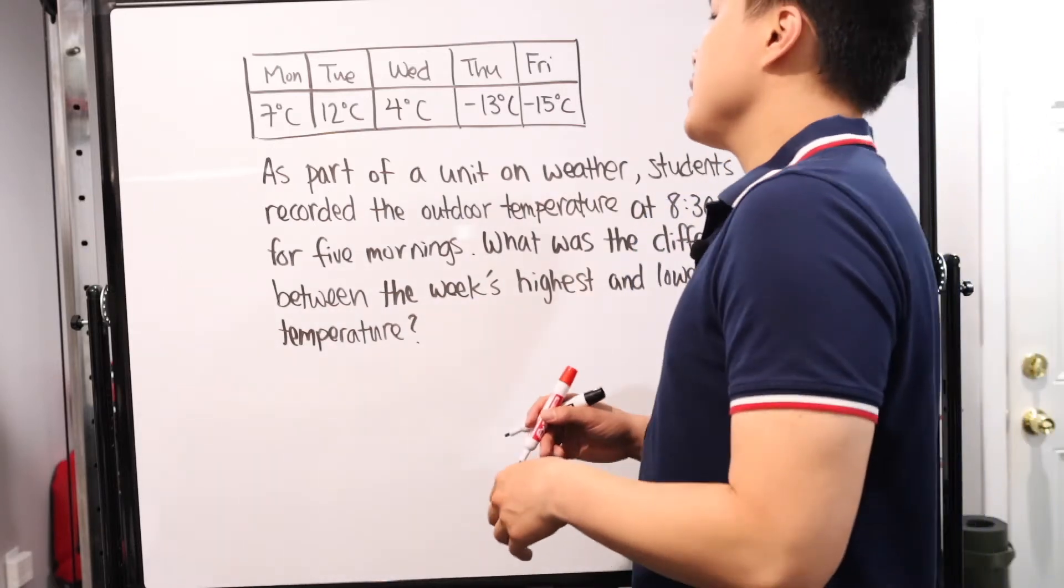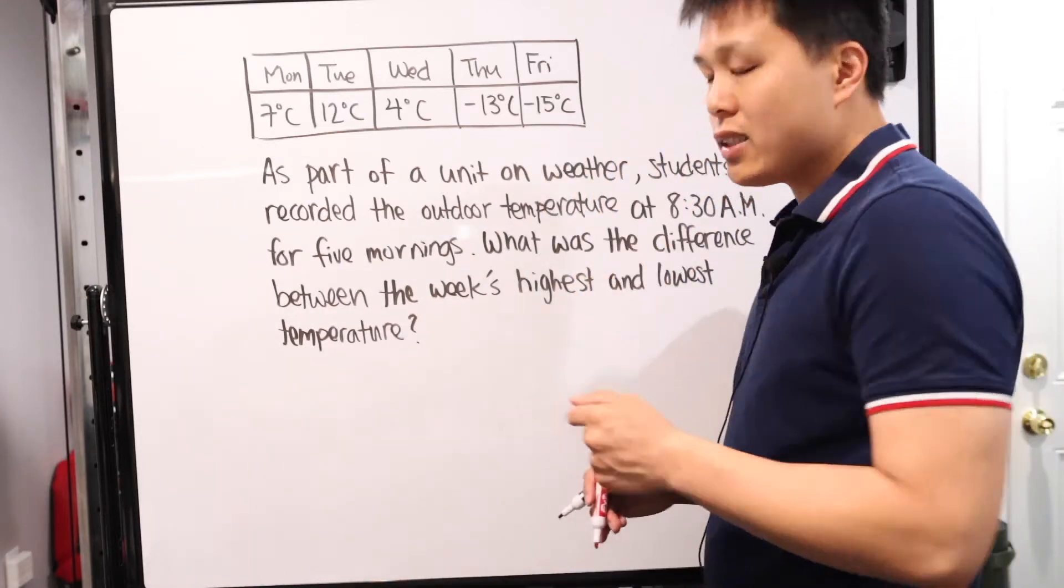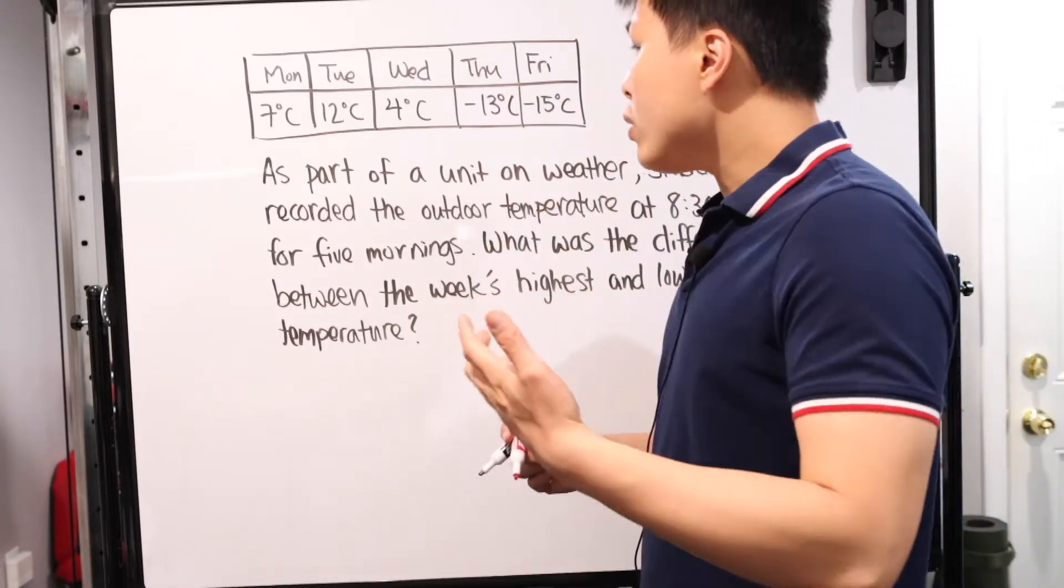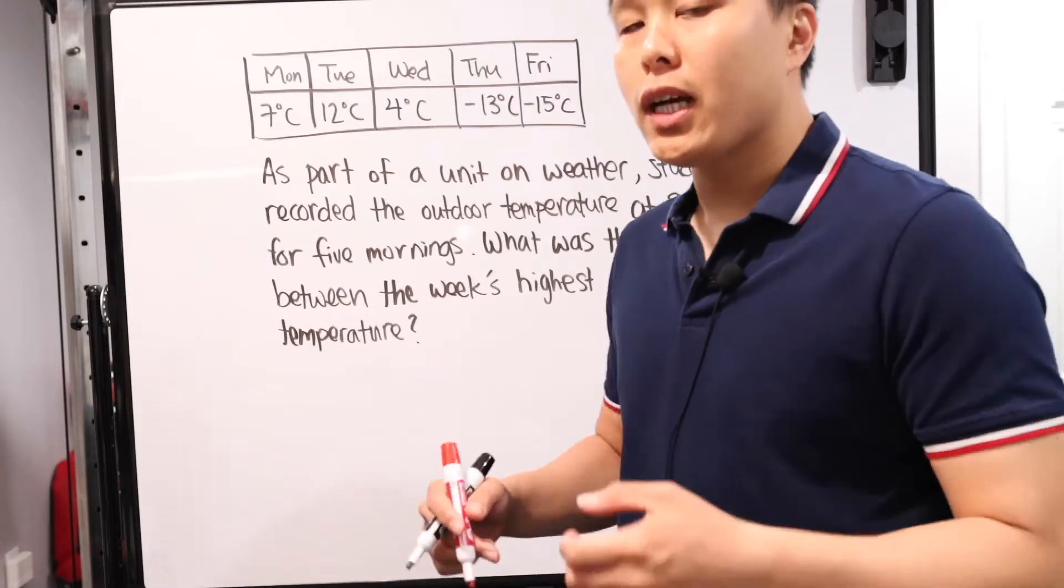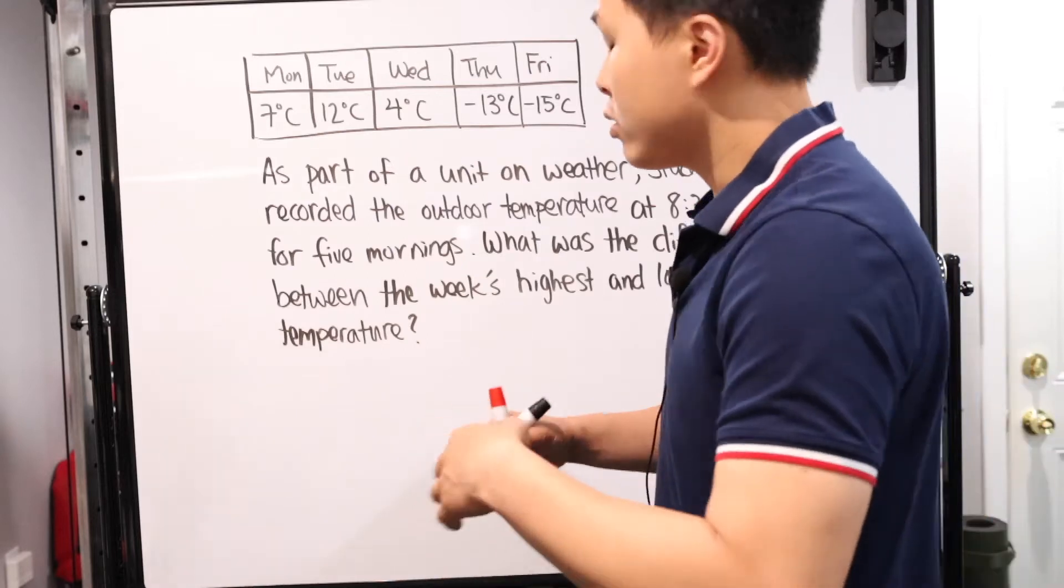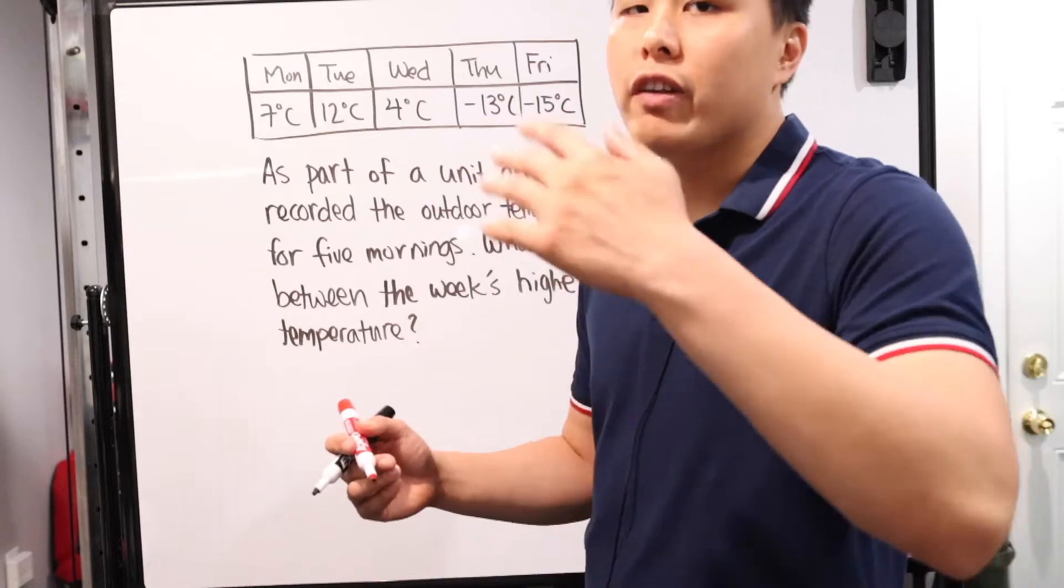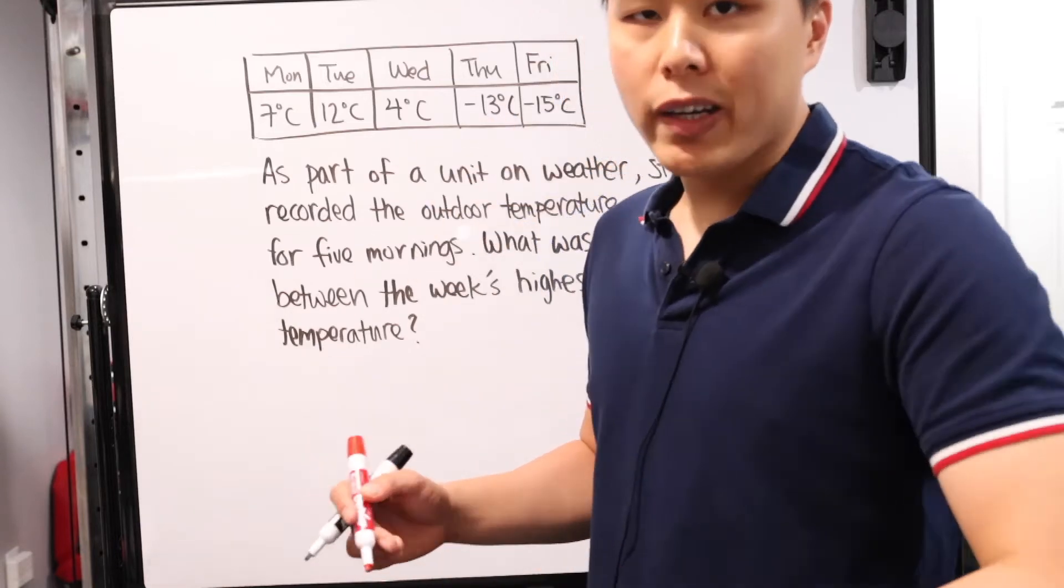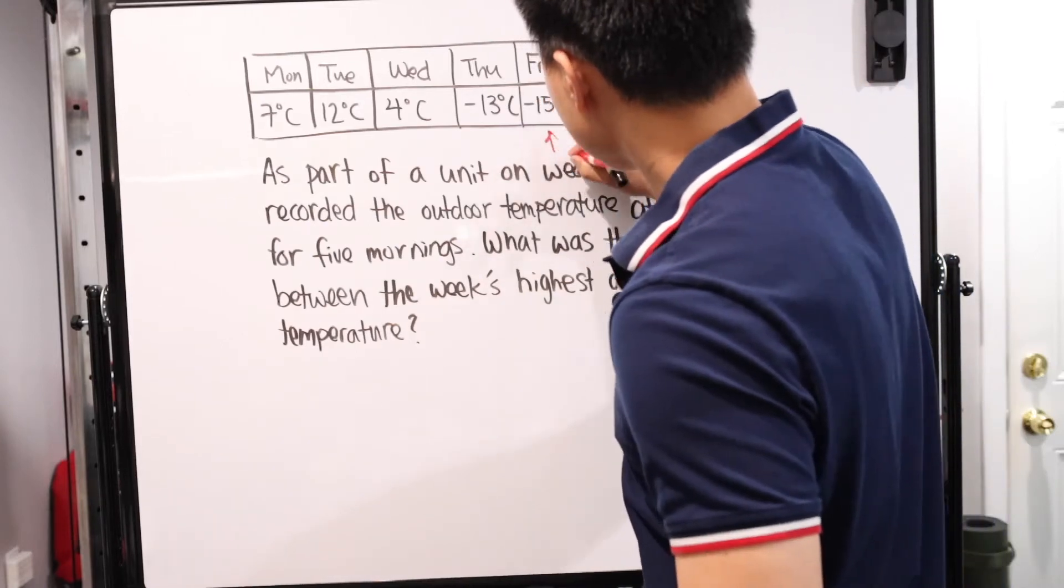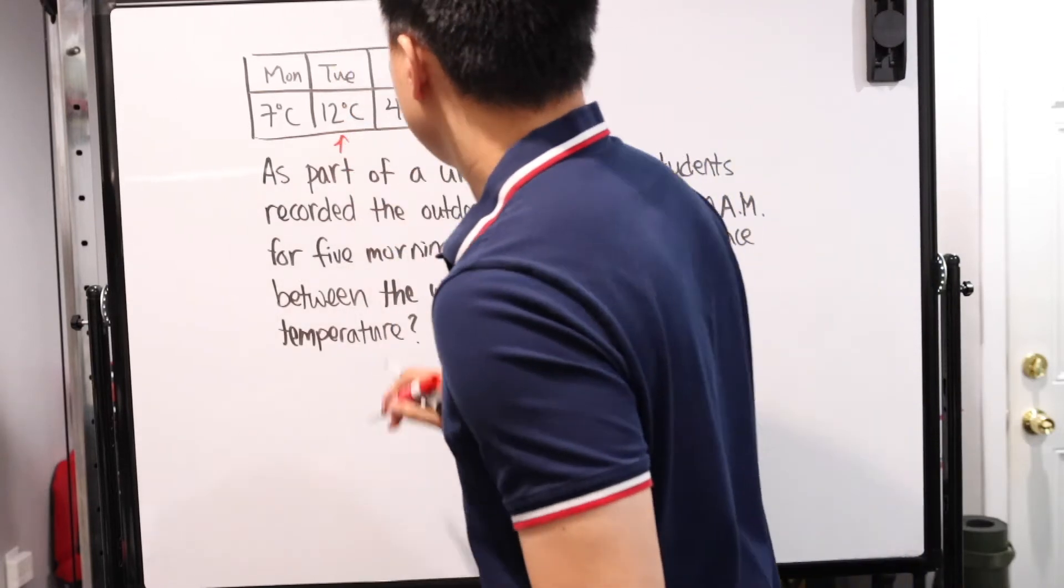The only thing that could potentially trip someone up is the idea of highest and lowest. Highest is fairly simple, it's just positive number as big as you can get. Lowest, however, sometimes we're used to saying lowest is as close to zero. That's not the case when talking about temperature or negative numbers. Usually lowest is as close to zero or if past zero, then as big of a negative number as you can get. Technically, the lowest would be negative 15, and the highest out of all the positive numbers would be 12.